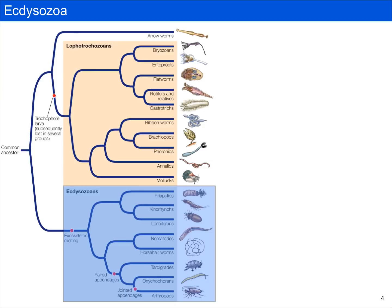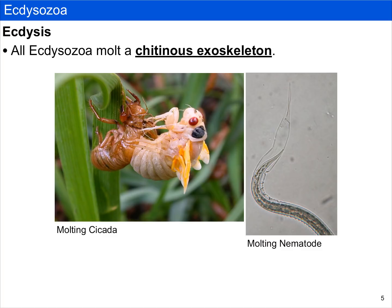Zooming in more closely, I have highlighted Ecdysozoa. You can see there are many different groups, and we're going to spend time talking about two: the nematodes and the arthropods. The namesake of Ecdysozoa is ecdysis — the process by which an animal sheds its external skeleton. All ecdysozoans molt a chitinous exoskeleton, which is well known in groups like insects, where we can see cicadas emerging from their old exoskeleton.